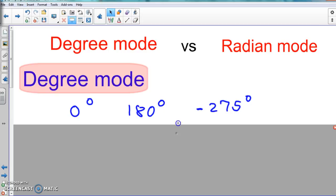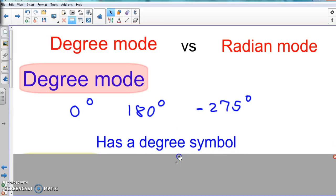And with each one of these, in order to tell that it's a degree, it's going to have a degree symbol. So each one of these has a degree symbol. To tell if it's degree mode, it will have a degree symbol there.